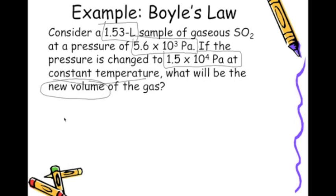So setting it up, we see that we have a V1 of 1.53 liters, and we have a P1 of 5.6 times 10 to the third pascals. And we see that we have a second pressure. It changes the pressure. So a P2 of 1.5 times 10 to the fourth pascals. And we're searching for a new volume, or we're searching for V2.